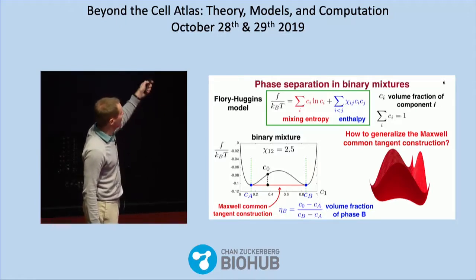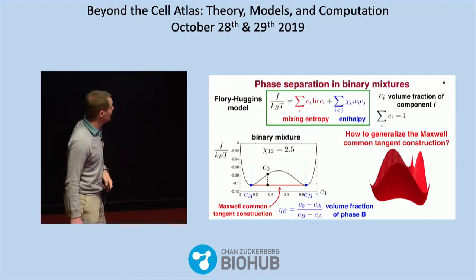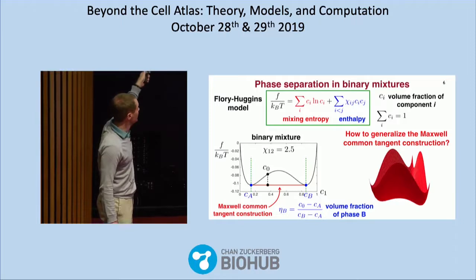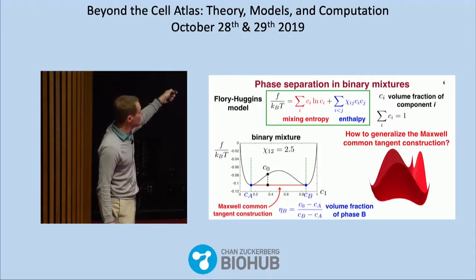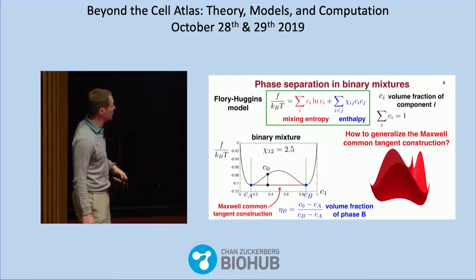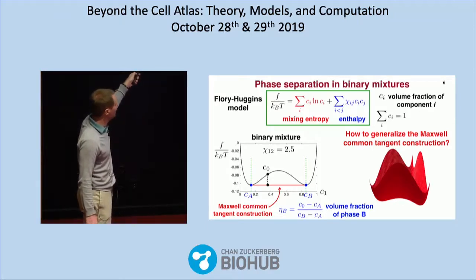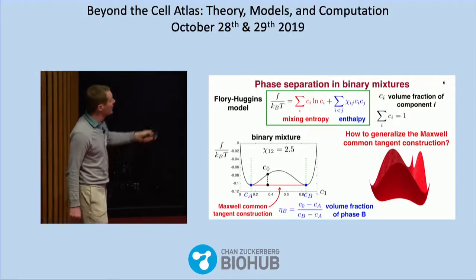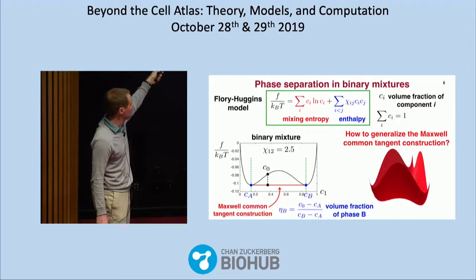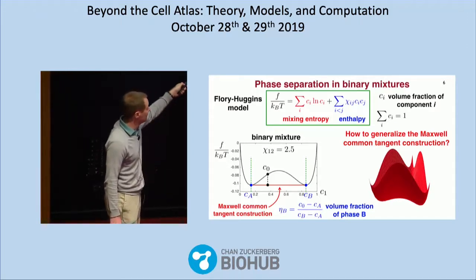The relative role between entropy and interactions is characterized by the chi_ij matrix, which encodes interactions between components i and j. For binary systems, we know from classical thermodynamics that if the free energy is non-convex as a function of concentration, there will be a region of phase separation. You identify that region using the common tangent construction: the two tangent points give the concentrations of the two coexisting phases, and outside that region the mixture is thermodynamically stable.